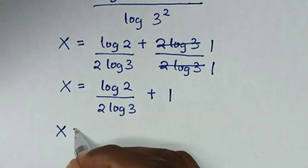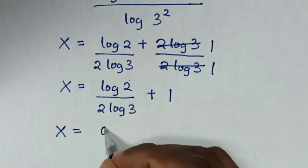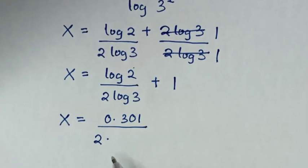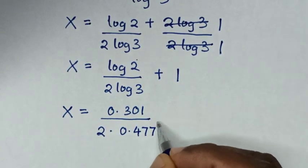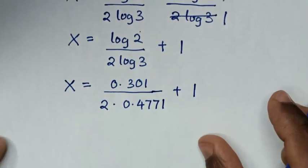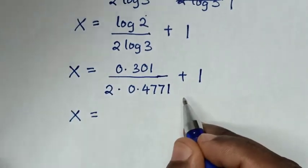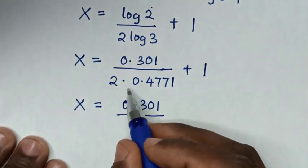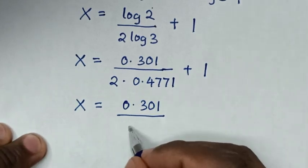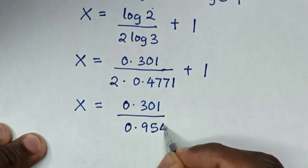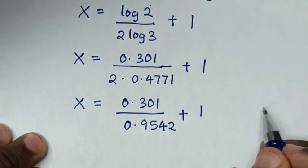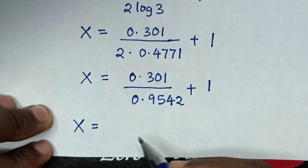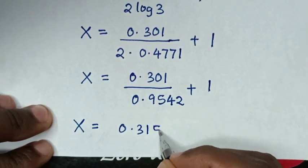Then in the next step, it will be x is equal to when we substitute: log of 2 in the calculator is 0.301, then over 2, then times log of 3 in the calculator is 0.4771. Then it will be x is equal to 0.301 over 2 times 0.4771, which is 0.9542, then plus 1. So x is equal to 0.301 divided by 0.9542, which is 0.3154, then plus 1.